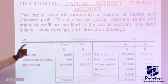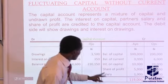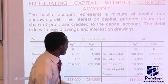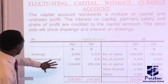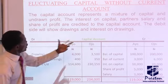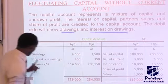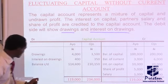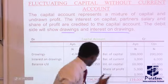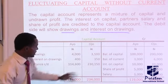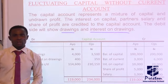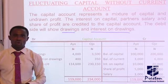Looking at the fluctuating capital account — that is, without a current account — the capital account represents a mixture of capital and undrawn profit. Interest on capital, partner salary, and share of profit are all credited to the capital account on the credit side. On the debit side, we show drawings and interest on drawings. The difference between the debit side and credit side gives us the balance.